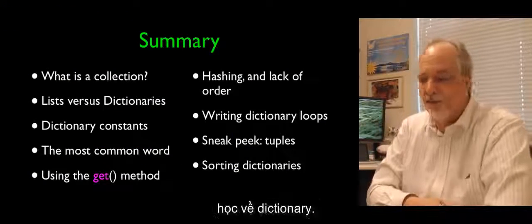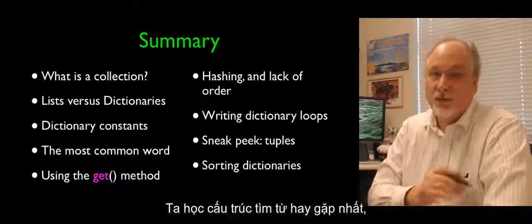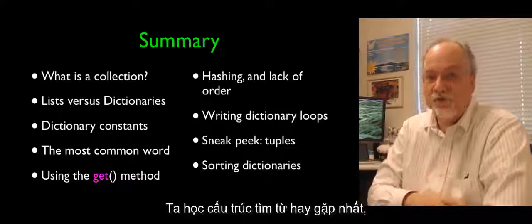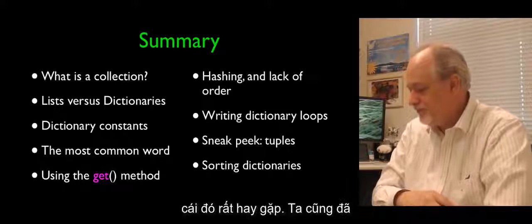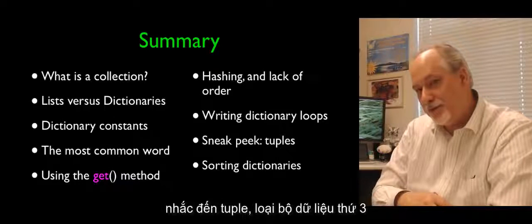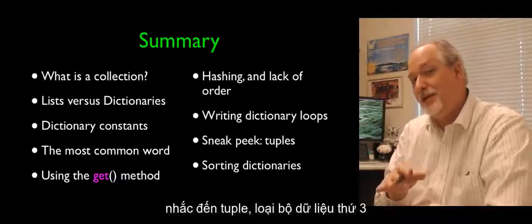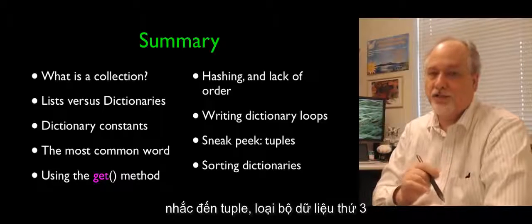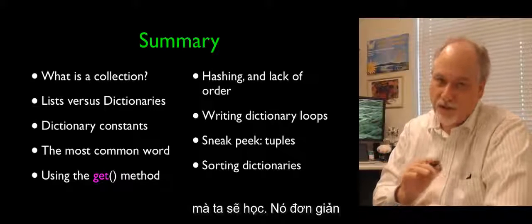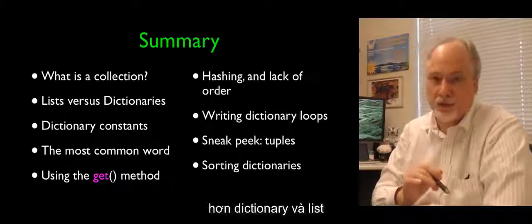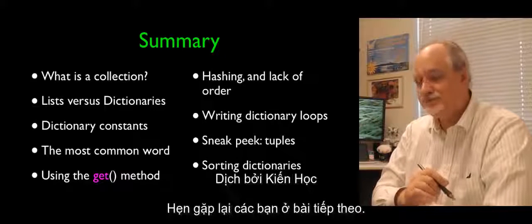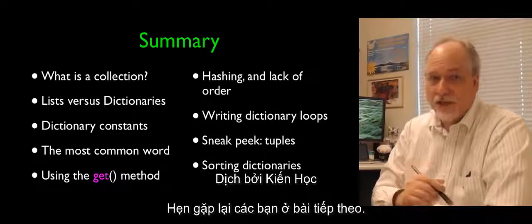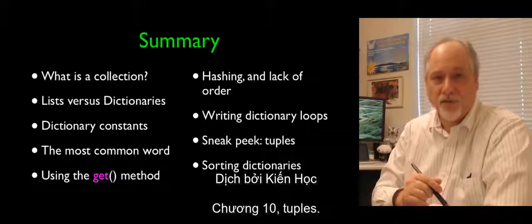We've reviewed collections, introduced dictionaries, done the most common word pattern, talked about the lack of order, and looked ahead at tuples — the third kind of collection we're going to talk about. Tuples are in some ways a little simpler than dictionaries and simpler than lists. See you in the next lecture: Chapter 10, Tuples.